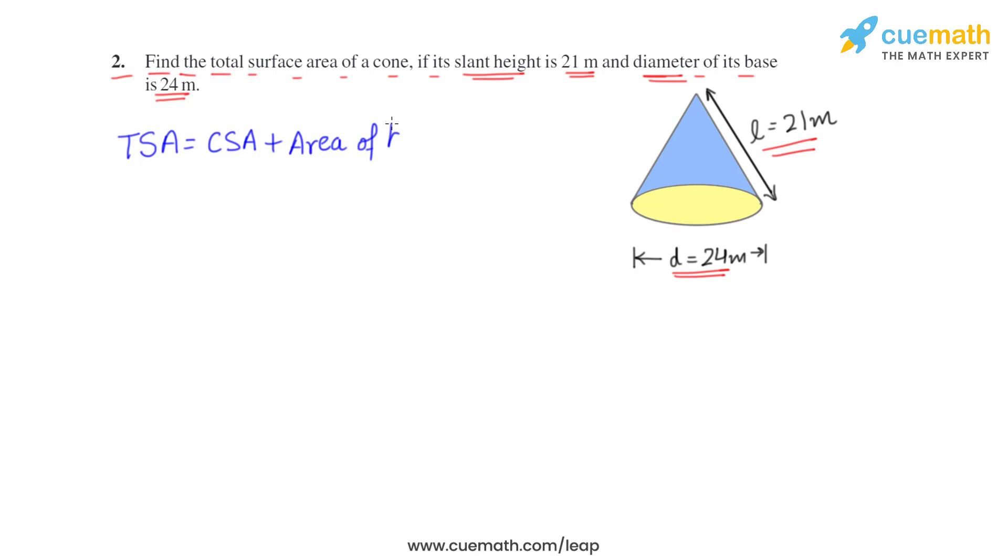The base is circular so area of base also we have to include, that will be the total surface area. Curved surface area we know that it is πrl plus area of base which is circular, so it means πr².